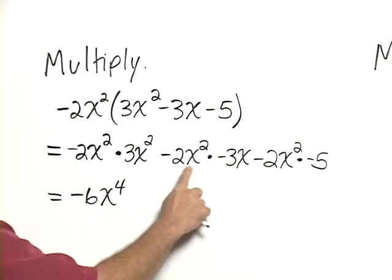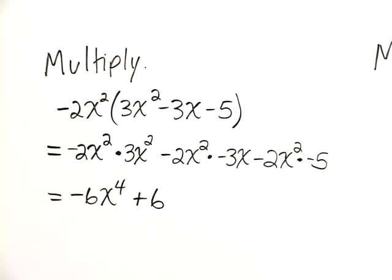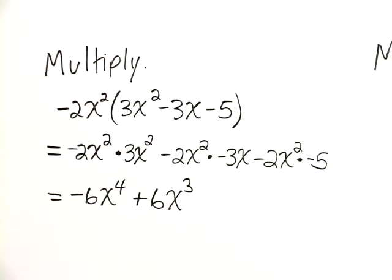In this one, we have negative 2 times negative 3 for positive 6, x squared times x for x cubed.